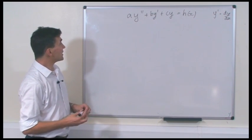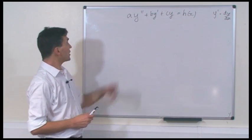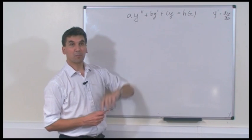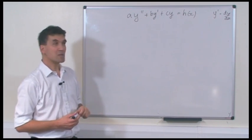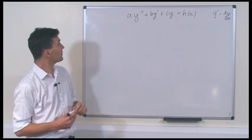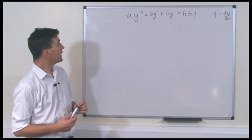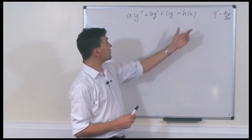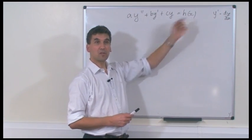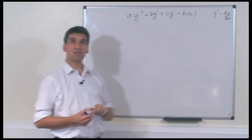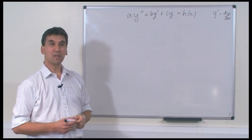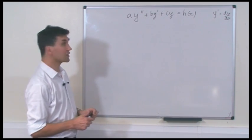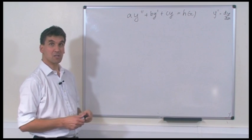This is a second-order equation — it has Y double prime. It's linear: there are no products of Y with itself, no Y squared, or Y times Y prime or anything like that. And this equation is inhomogeneous — H of X is not equal to 0. That means that Y equals 0 is not a solution of this equation. That's the characteristic of an inhomogeneous equation.